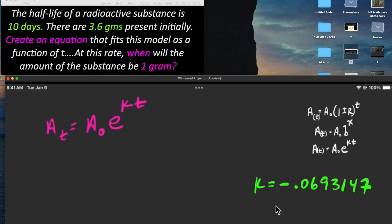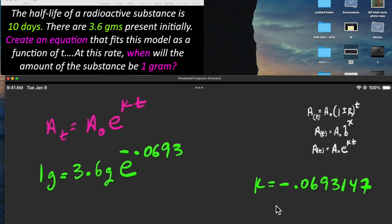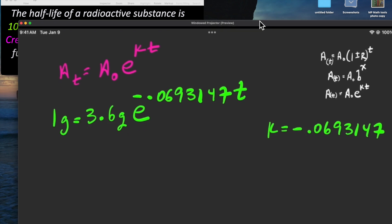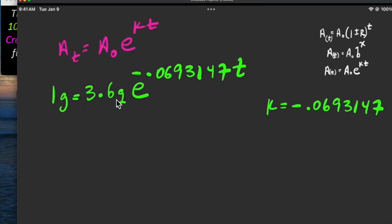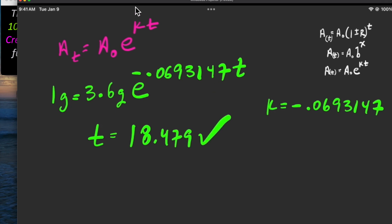Now we use this k value in the next part of the problem: when is the amount one gram? We set up 1 = 3.6 times e^(−0.0693147t). Dividing both sides by 3.6, taking the natural log, and dividing by k gives us the same answer of 18.479 days. It makes sense that k is negative because this is a decay problem.